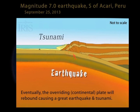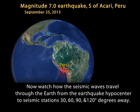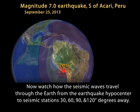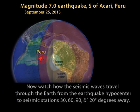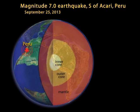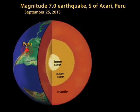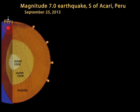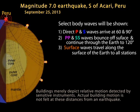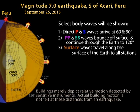Now we will watch the seismic waves travel through the Earth from this earthquake to seismic stations 30, 60, 90, and 120 degrees away from the epicenter. The cutaway of the Earth will show generalized wave paths recorded by the seismic stations. The buildings merely depict the relative motion detected only by sensitive seismic instruments at these distances.